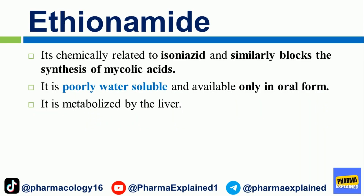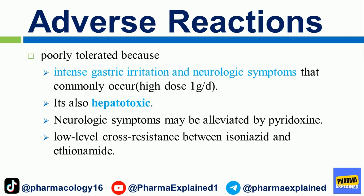Ethionamide is chemically related to isoniazid and similarly blocks the synthesis of mycolic acids. It is poorly water-soluble and available only in oral form, and is metabolized by the liver. Adverse reactions: It is poorly tolerated due to intense gastric irritation and neurologic symptoms that commonly occur at high doses (1 g/day). It is also hepatotoxic. Neurologic symptoms may be alleviated by pyridoxine. There is low-level cross-resistance between isoniazid and ethionamide.